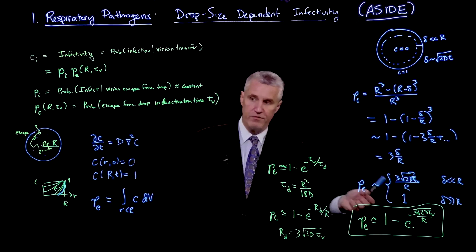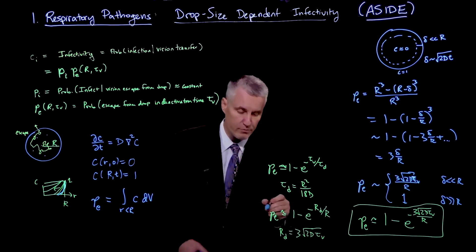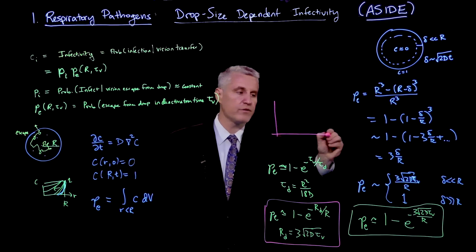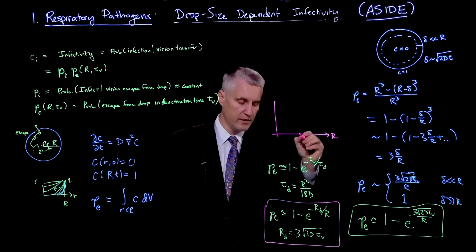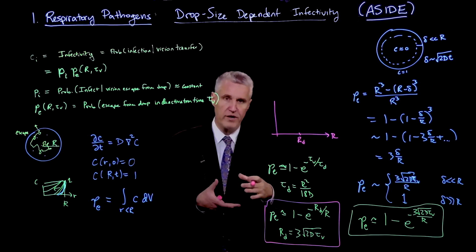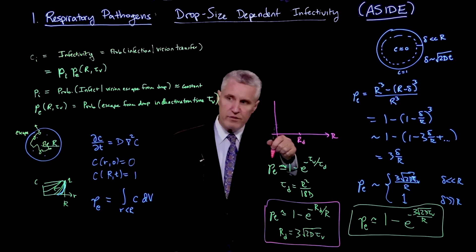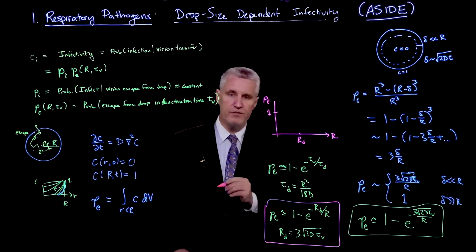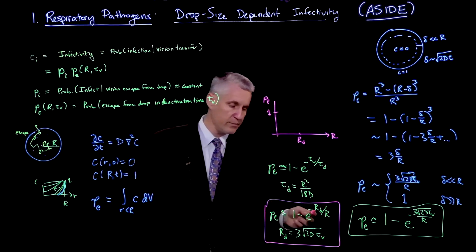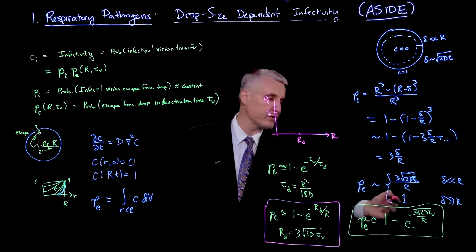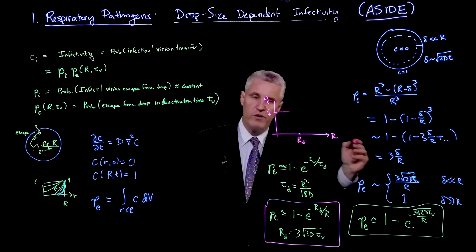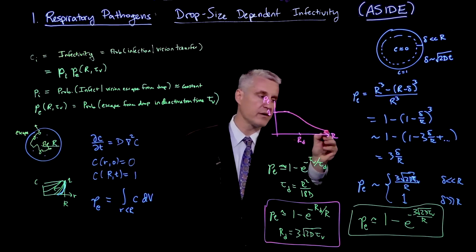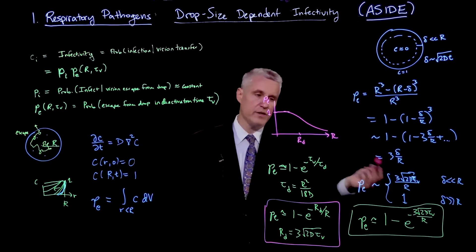What does this function look like as a function of R? Let's plot this. As a function of R, here is this Rd, this typical critical size. When we are smaller than that critical size, then Pe, the escape probability, essentially is very close to 1. But then when it gets much larger than Rd, then it decays as sort of 1/R. So it's a fairly slow decay in the long run.